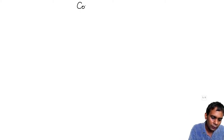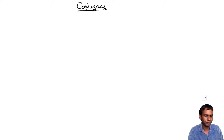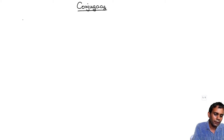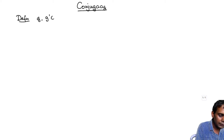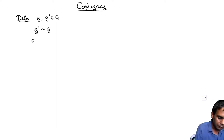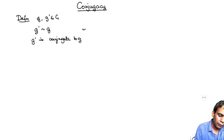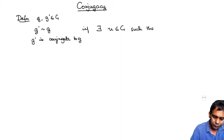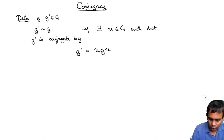Now let's talk about conjugacy of elements in groups. Let G be a group and given two elements g and g′ in G, we say that g′ is conjugate to g — denoted by the tilde symbol — if there exists u in G such that g′ equals u g u inverse. I claim that this is an equivalence relation.